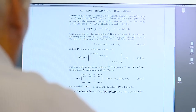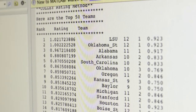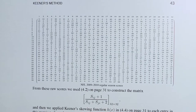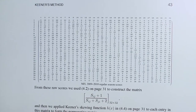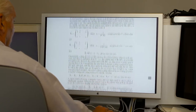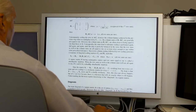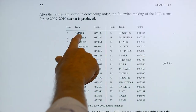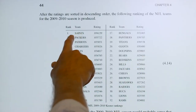Using what's known as linear algebra, mathematicians arrange these types of sports data into a matrix of rows and columns. Then they apply innovative mathematical algorithms — step-by-step procedures for carrying out specific numerical calculations — to obtain information that can better rate and rank the teams.